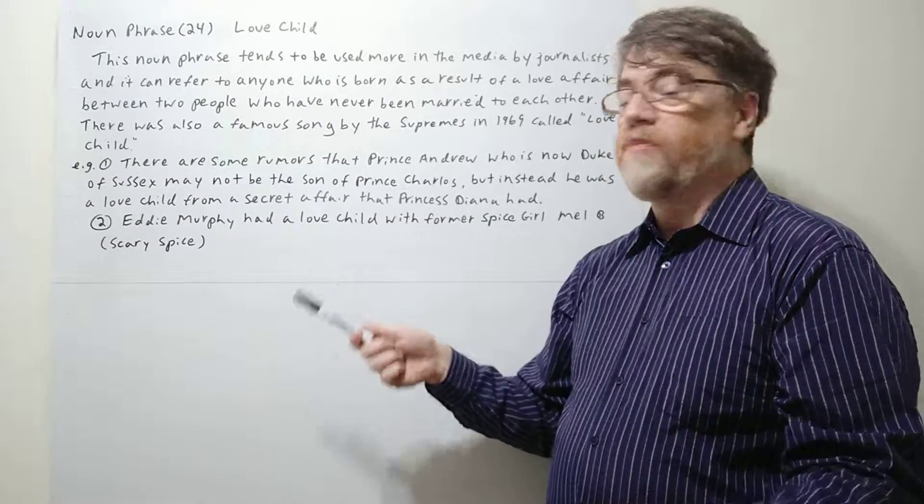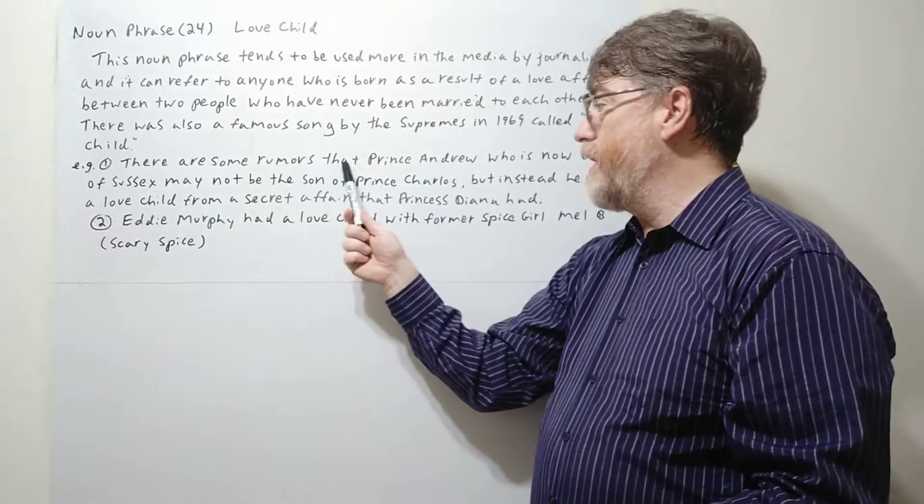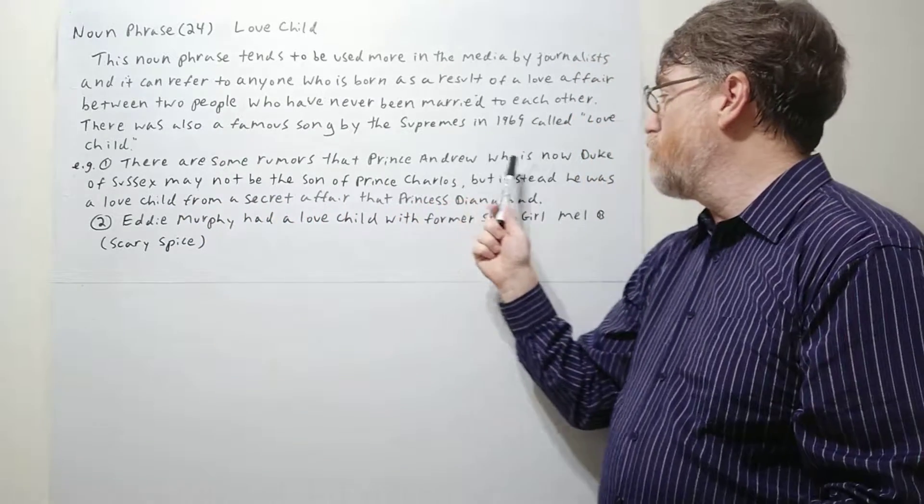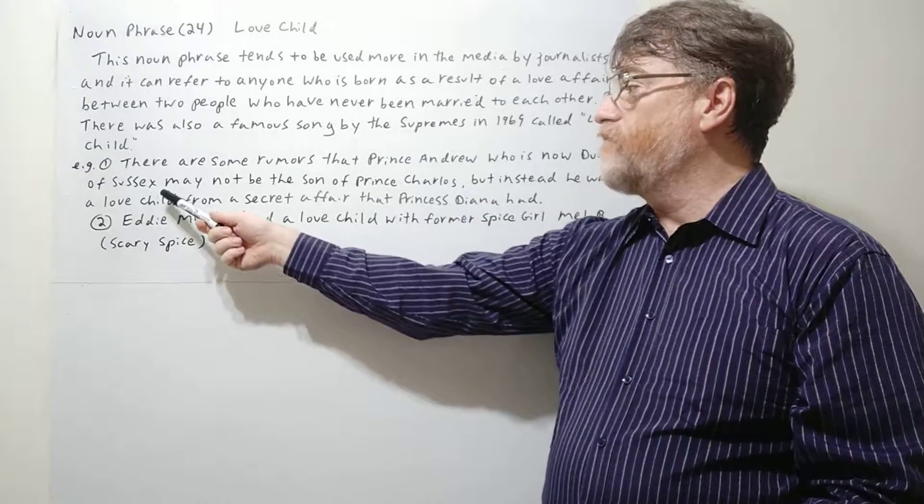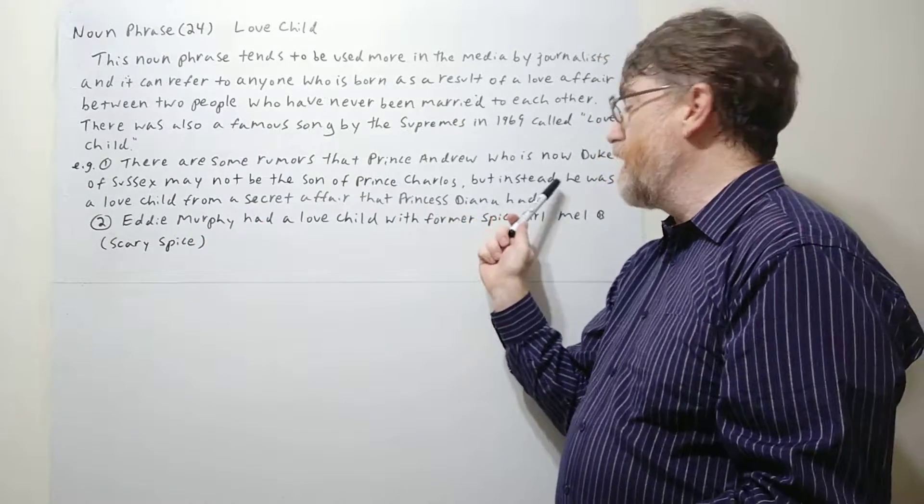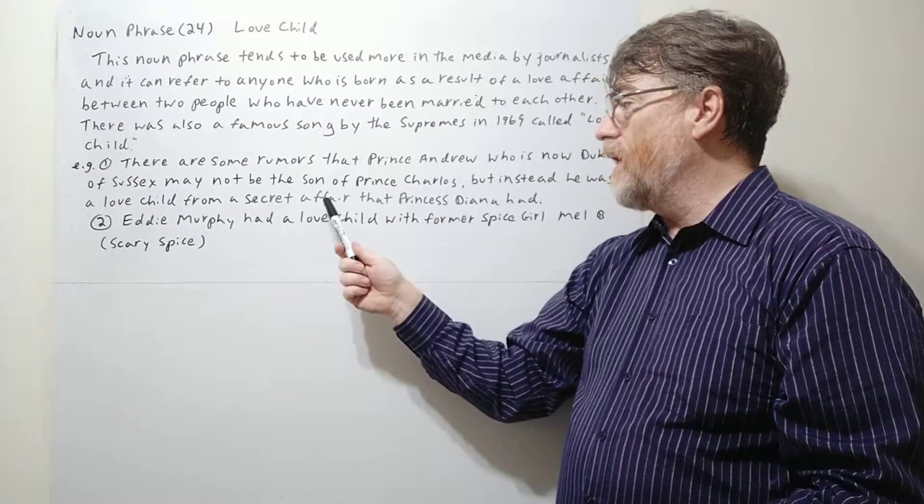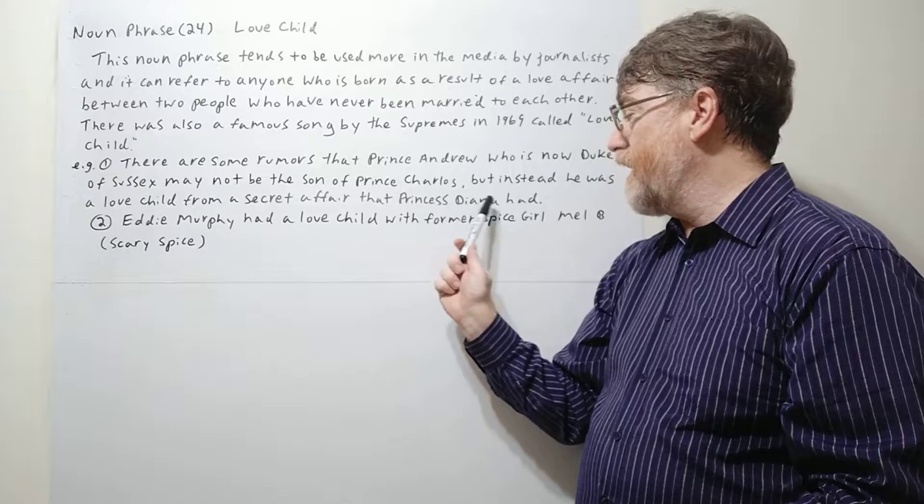Let's look at example number one here. There are some rumors that Prince Andrew, who is now Duke of Sussex, may not be the son of Prince Charles, but instead he was a love child from a secret affair that Princess Diana had.